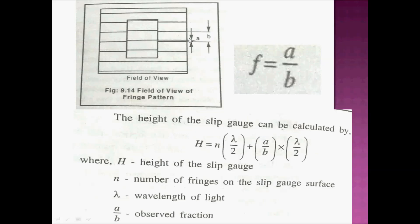The height of the slip gauge can be calculated by H equals n times lambda by 2 plus a by b times lambda by 2. Where n is the number of fringes on the slip gauge surface, lambda is the wavelength of light, either monochromatic light wavelength, H is the height of the slip gauge, and a by b is the observed fraction. This completes the second module. Thank you.